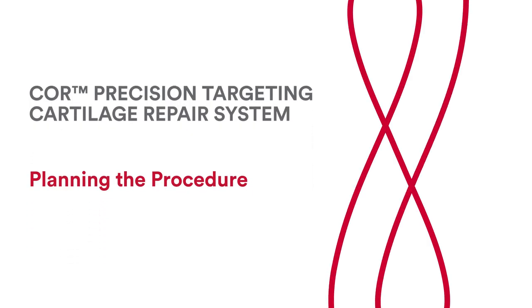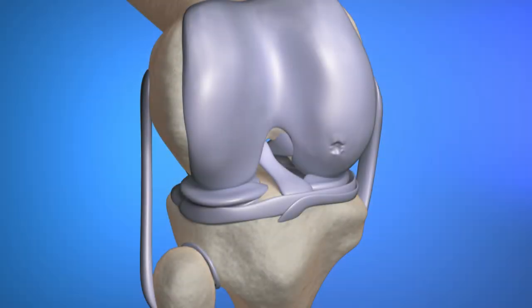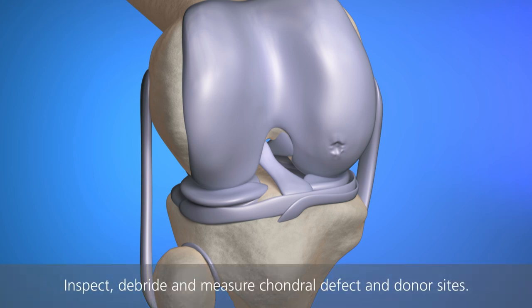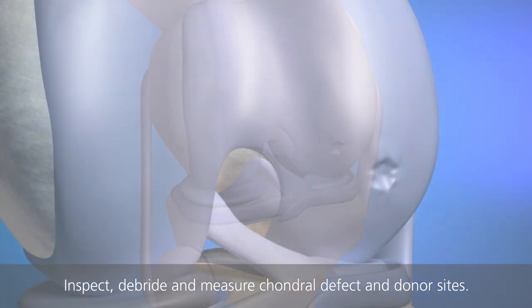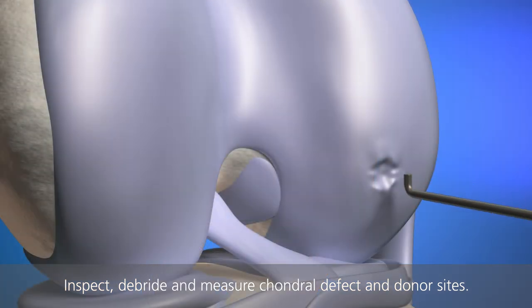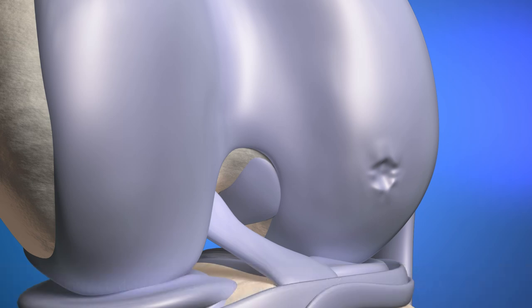Planning the Procedure. Chondral defect and donor sites should be inspected, debrided, and measured to determine the number and size of grafts to be harvested. Beginning at the margin of the lesion, a probe or core plunger can be used to measure the defect size, determine the harvester size, and plan graft placement within the lesion.